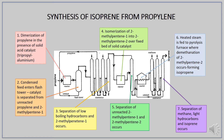To begin the presentation, synthesis of isoprene from propylene begins with dimerization of propylene in the presence of a solid acid catalyst, namely tripropyl aluminium. Then, propylene is condensed and fed to a flash tower where the catalyst is separated from unreacted propylene and 2-methyl-pentene-1. After that, low-boiling hydrocarbons and 2-methyl-pentene are separated based on their boiling points in a series of distillation columns. 2-methyl-pentene-1 undergoes isomerization to form 2-methyl-pentene-2 over a fixed bed of solid catalyst. Next, unreacted reactants and products are separated, which is followed by demethanation of 2-methyl-pentene-2 to produce methane and isoprene.